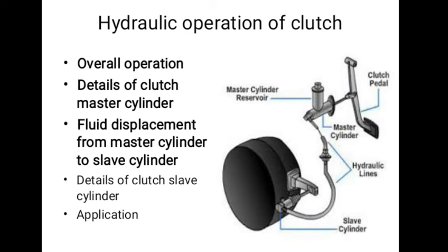This disconnects the cylinder from the reservoir. Further movement of the plunger displaces fluid through the pipelines to the slave cylinder and disengages the clutch.